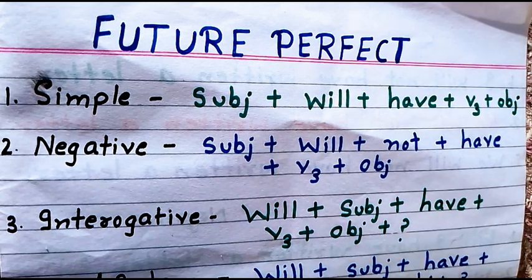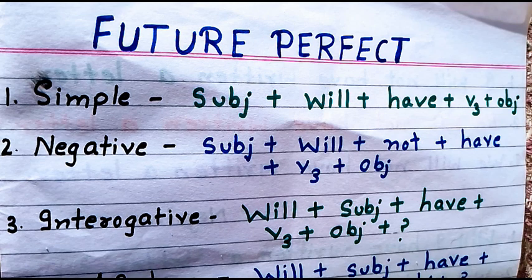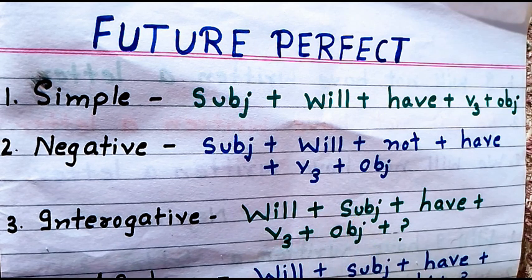The second type is negative. The rule is: Subject + will + not + have + third form of verb + object. Just as in our previous video the combination of 'will be' breaks when we use negative, similarly in perfect tense the combination of 'will have' also breaks when we use negative. Last comes the third form of verb and object.